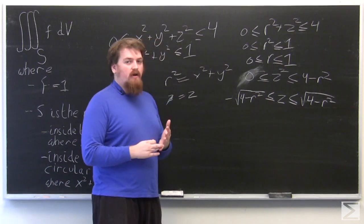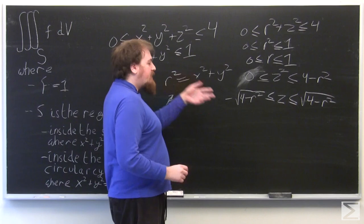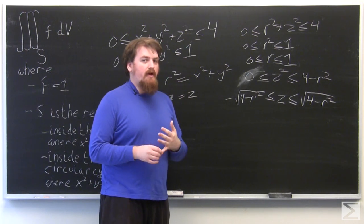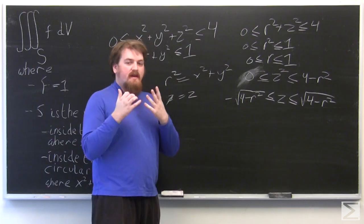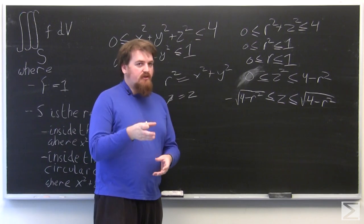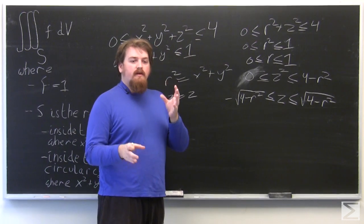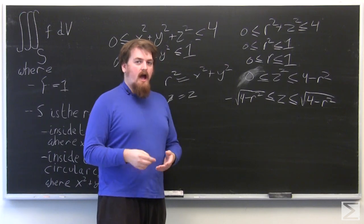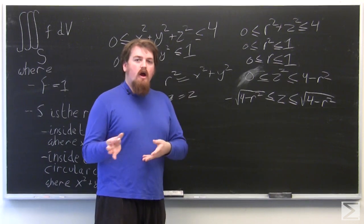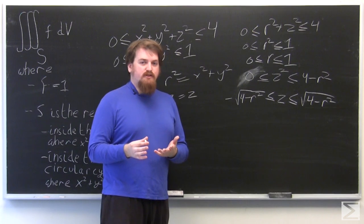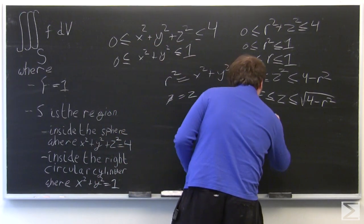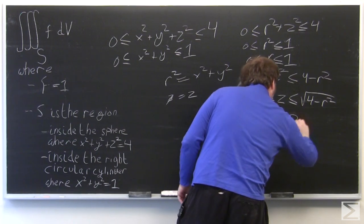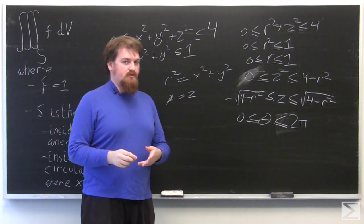Now we have limits of integration for r and z that define S. Since S is the intersection of the solid ball of radius 2 and the solid right circular cylinder of radius 1 about the z-axis, points in S go all the way around the origin azimuthally. So theta, the azimuthal angle in cylindrical coordinates, is not restricted, and our limits for theta are 0 ≤ θ ≤ 2π.